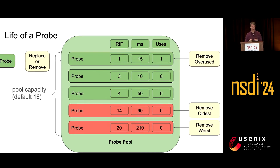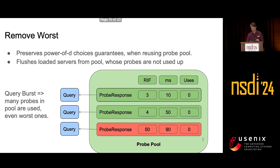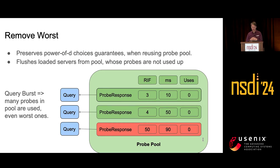The remove-worst policy is the most tricky and interesting. What can happen is if you keep selecting the best probes, the worst ones accumulate in the pool and are never used — until a burst of queries forces you to use them. If you don't remove the worst ones, you can violate the power of D guarantee. We investigated this and found that as long as you are removing the worst ones, you still get the power of D choices guarantees.